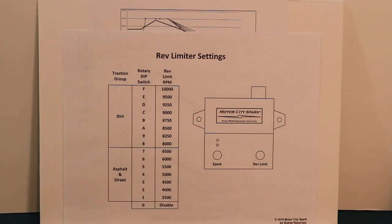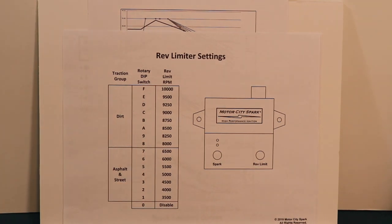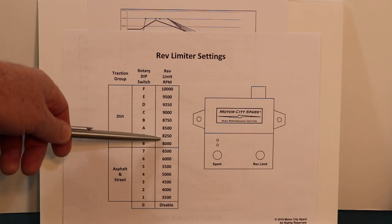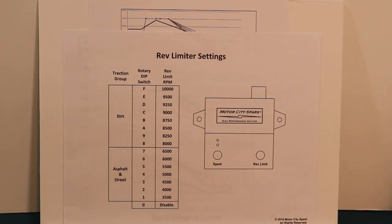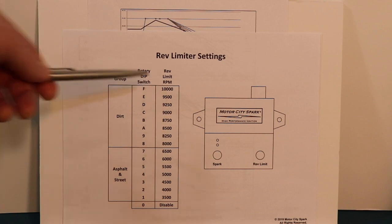Now, if we go up to the dirt settings up here, we asked around to a lot of people and the lowest RPM they run is 8,000 and the highest is 9,500. And so that's what we have here. We have 8,000 to 9,500 in 250 RPM increments to give you some resolution in there. And we also had a bunch of guys that really wanted a 10,000 RPM rev limit. So we put that in there as well.